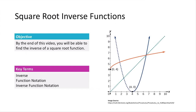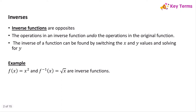In this video, we're going to talk about how to find the inverse of a square root function. Remember that inverse functions are opposites — the operations in an inverse function will always undo the operations in the original function. The inverse of a function can be found by switching the x and y values and solving for y. Notice that f(x) = x² and f⁻¹(x) = √x are inverse functions because the square root undoes the square, so these operations are opposites.